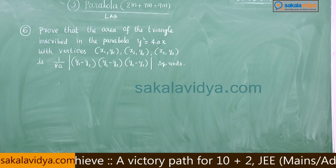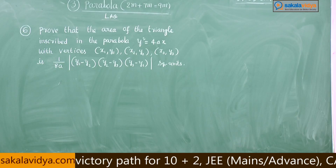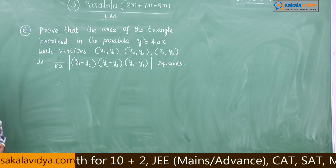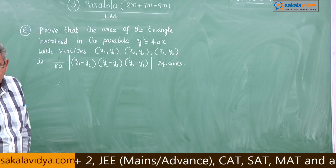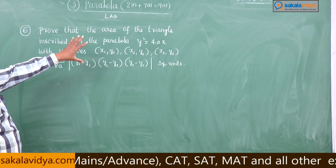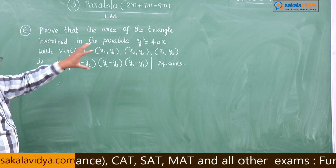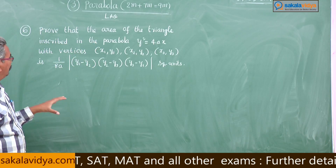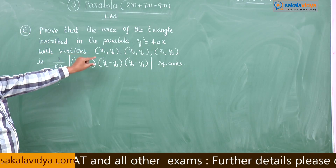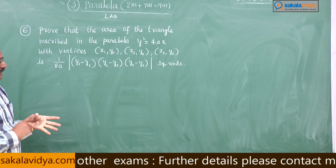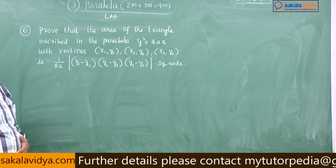This is the problem: the area of the triangle inscribed in the parabola, having the vertices (x1, y1), (x2, y2), (x3, y3) — we have to find this out.